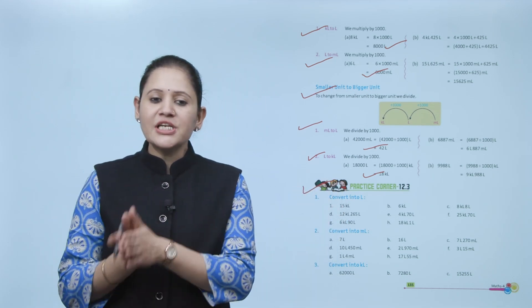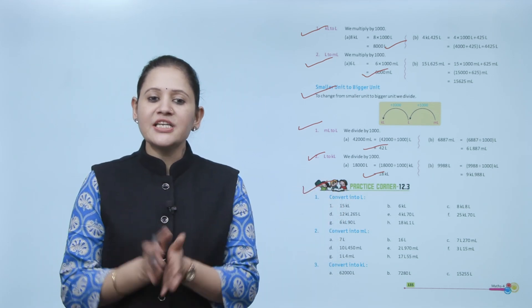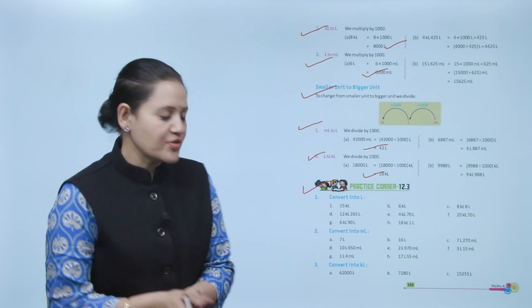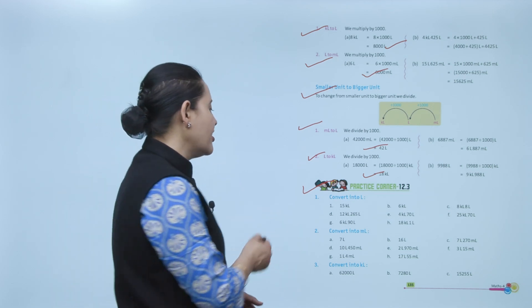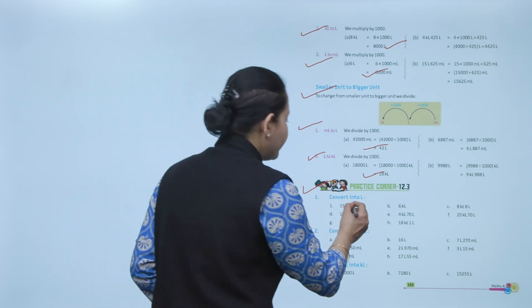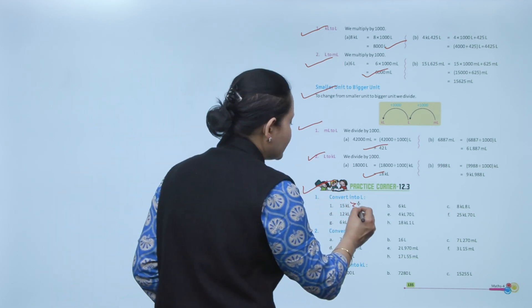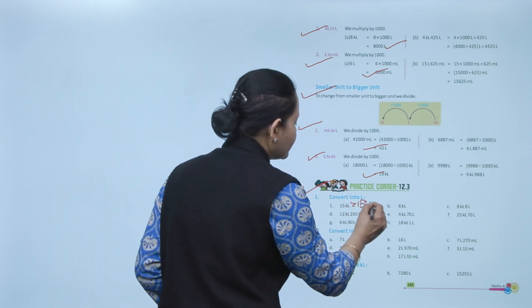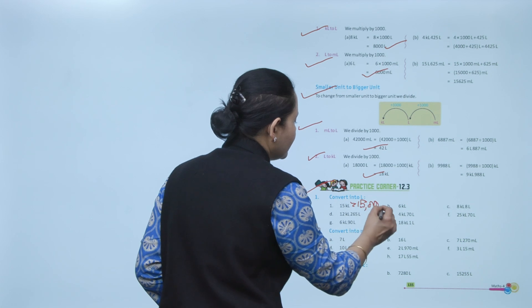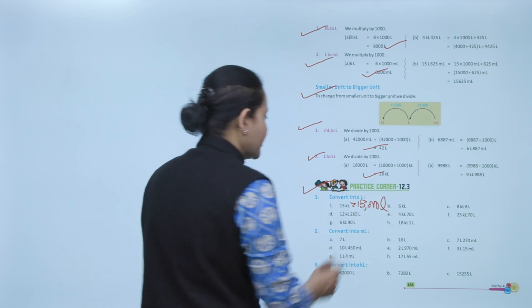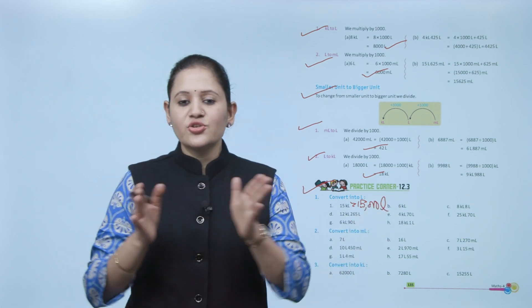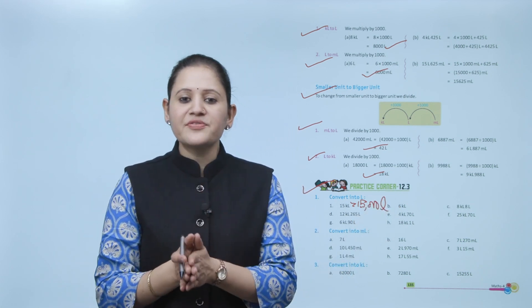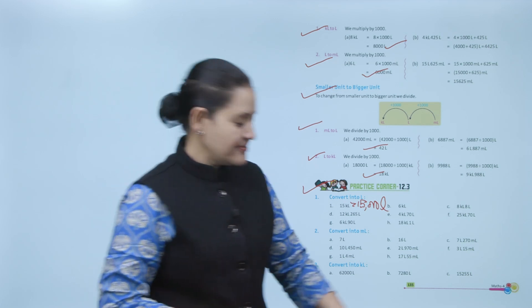Convert into liters: 15 kiloliters. 15 × 1000 = 15,000 liters. Practice all the questions of this exercise.